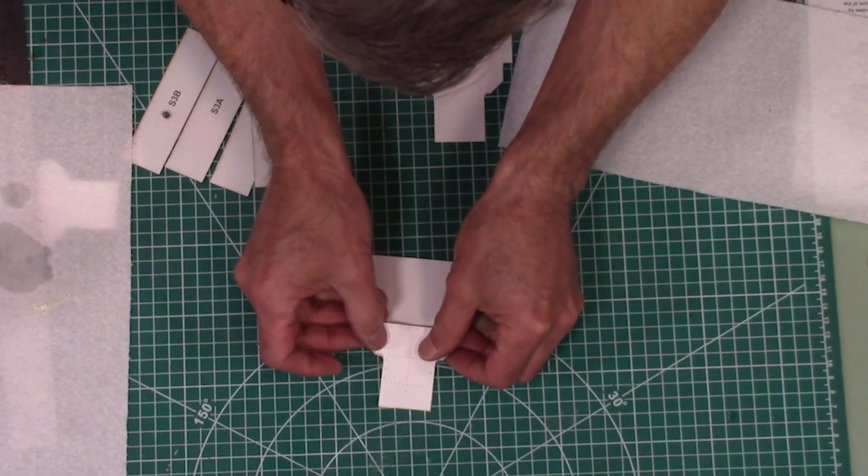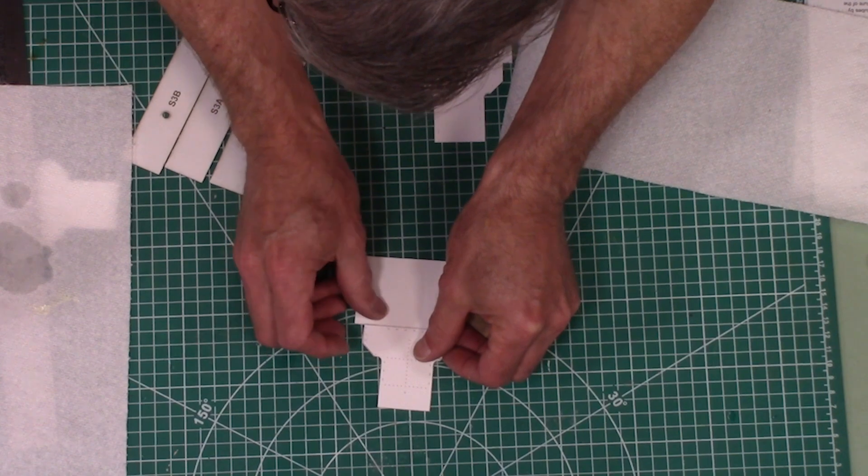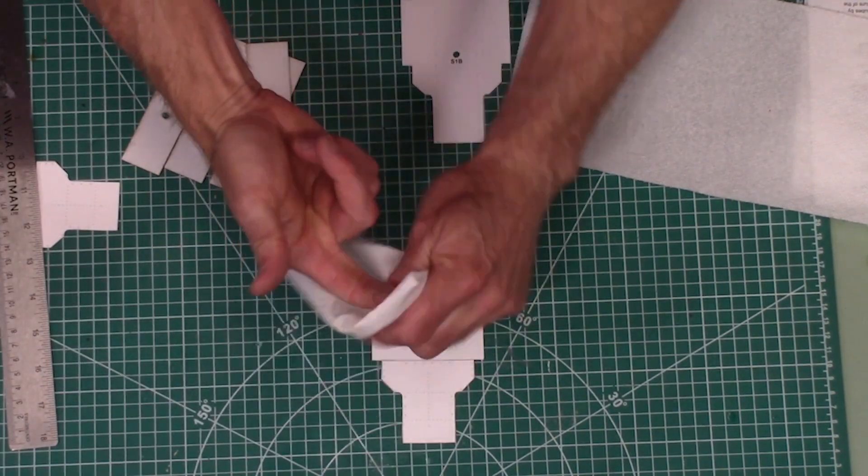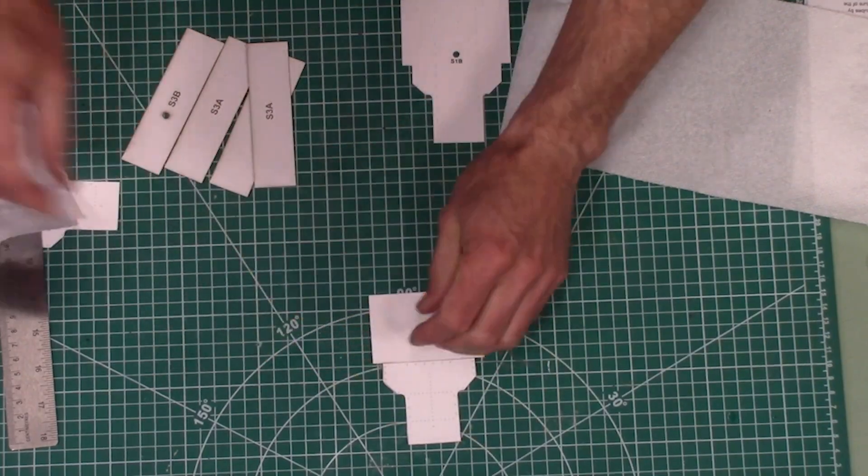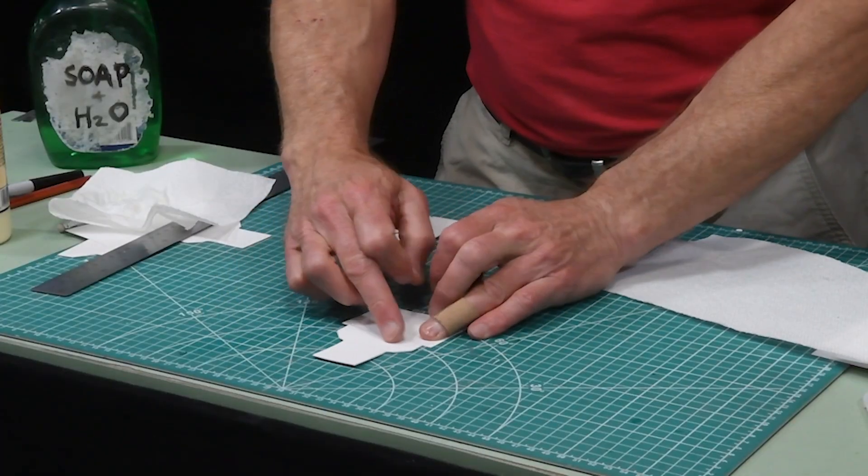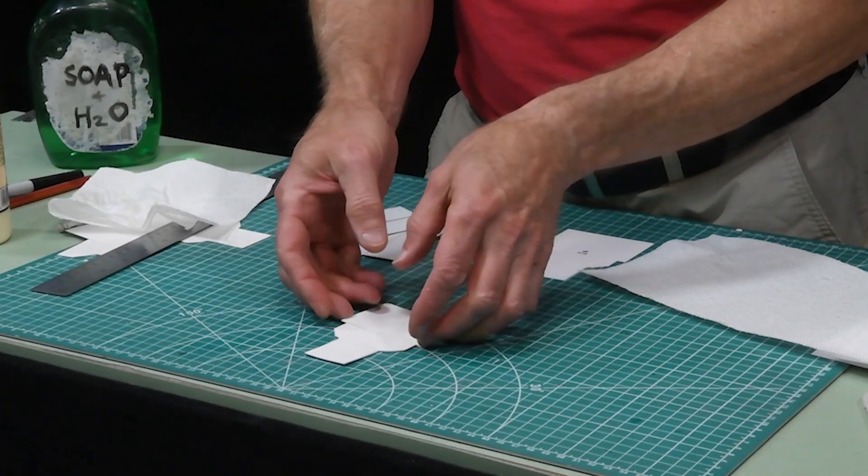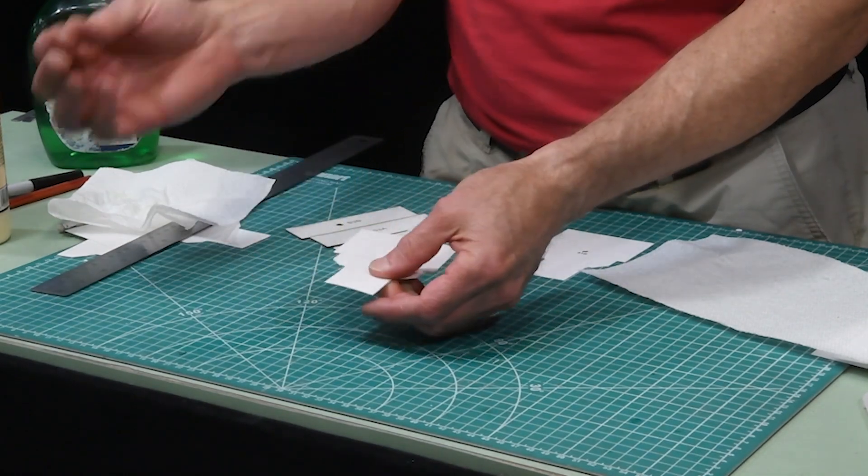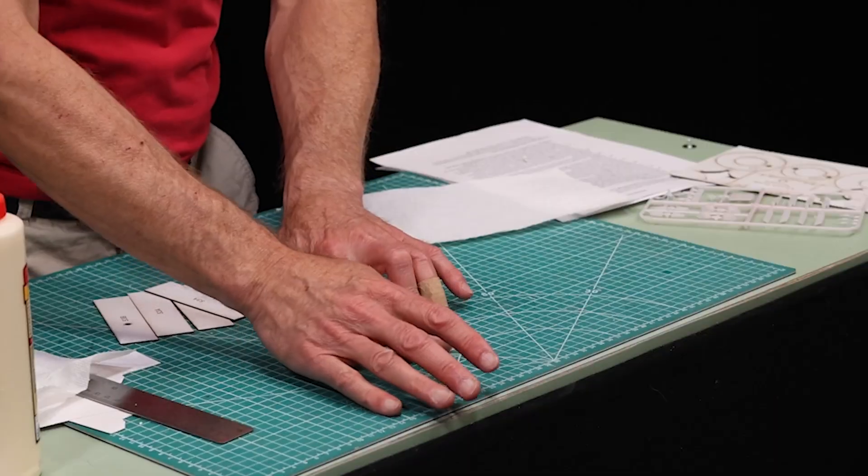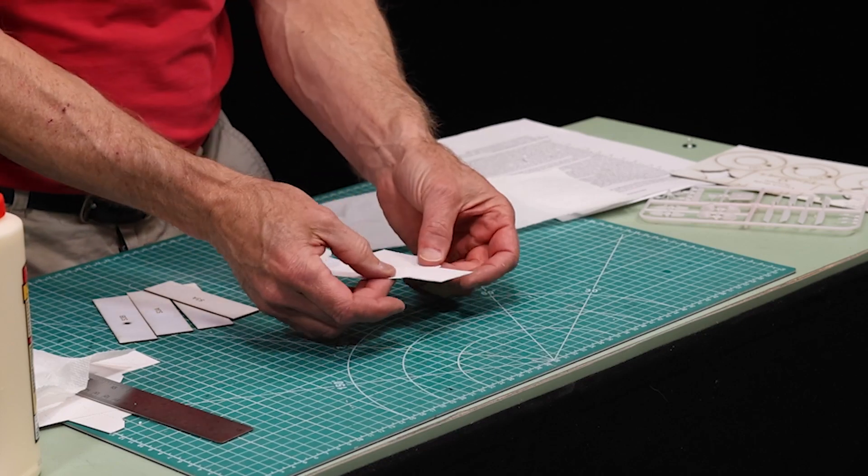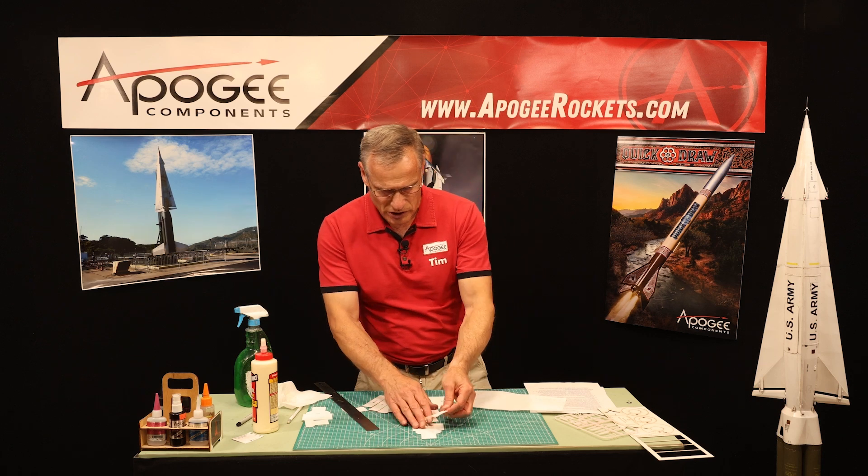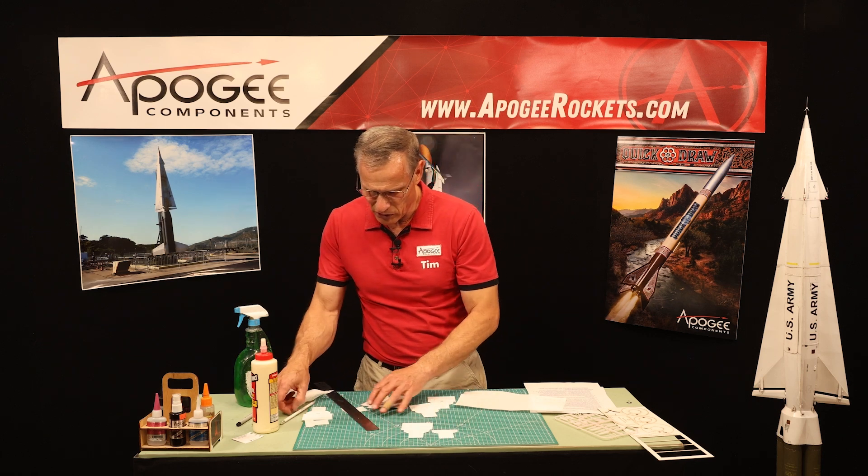So I wet my finger, and I'm just using some soap and water solution here. Just line up all those edges. Keep your fingers, keep the glue off of them. If you keep your fingers clean, then the outside of the part looks really clean, and that's going to help you later on. Now this is going to want to curve a little bit as it dries. So just kind of check it every now and then to make sure it's nice and flat.